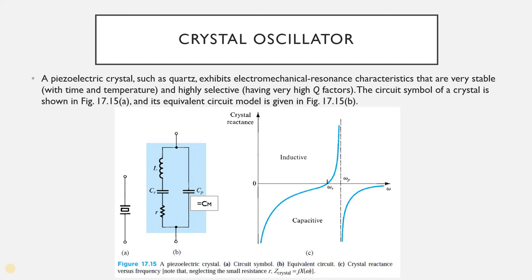For example, if it is designed for 3 megahertz, we will be getting the output waveform frequency as 3 megahertz. The crystal has greater flexibility in holding a constant frequency. Crystal oscillators are preferred when greater frequency stability is required, and hence crystals are used in watches, communication transmitters and receivers, etc.